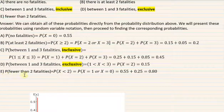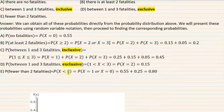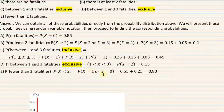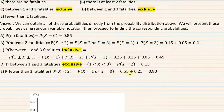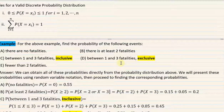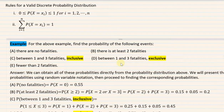Probability of fewer than 2 fatalities means P(X < 2), which is 1 or none — since we can't have negative outcomes. These two events are mutually exclusive, so P(X = 1) + P(X = 0) = 0.25 + 0.55 = 0.80, or 80%. That's what these probability distributions are good for.